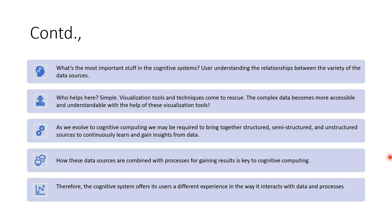The most important thing in cognitive computing is understanding the relationship between a variety of data sources. Visualization techniques and tools come to the rescue — complex data becomes more accessible and much easier to understand using these visualization tools. Cognitive computing is evolving and still has a lot of room to grow. We have structured, semi-structured, and unstructured data, and we expect cognitive systems to continuously learn and gain insights from all of them. So tools, visualization, NLP, and deep learning techniques must all be combined to get proper insights, with data sources combined with processes for gaining appropriate results. I hope this session was useful — please type any questions in the chat section. Thank you.